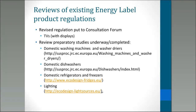All the regulations have built-in review dates, as technology changes and sometimes there are unintended consequences or loopholes in how regulations are written. Products currently at a stage of review include TVs, washing machines, washer-dryers, dishwashers, fridges and freezers, and lighting, with links to the preparatory studies describing what's going on.